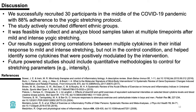In summary, our group successfully recruited 30 participants in the middle of the COVID-19 pandemic with an 88% adherence to the yoga stretching protocol. The study actively recruited different ethnic groups, which was an important achievement. It was feasible to collect and analyze blood samples at multiple time points after mild and intense yoga stretching, as well as in the control group. Our results suggest strong correlations between multiple cytokines in their initial response to stretching, but not in the control condition, helping us identify cytokines potentially positively modulated by the intervention that we hope to use in future larger trials.